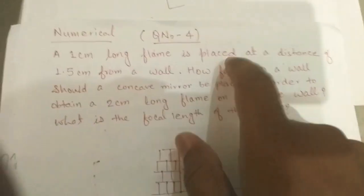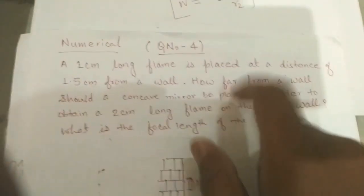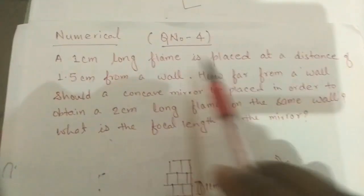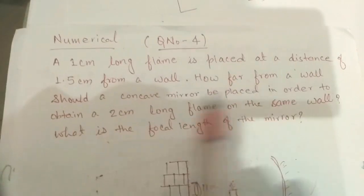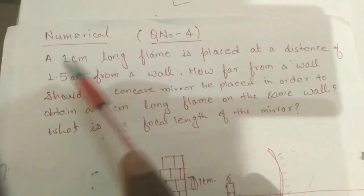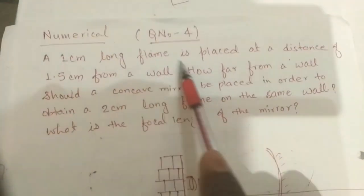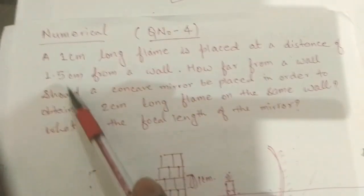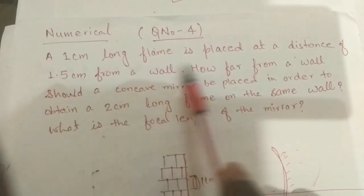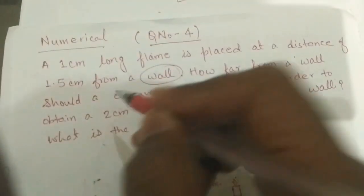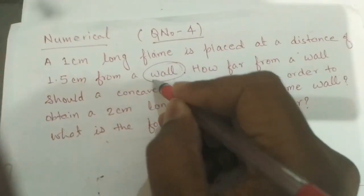After going through in depth, I have found that there was a mistake in the question. The question states: a 1 cm long flame is placed at a distance of 1.5 cm from the wall. That should not be wall — this should be mirror.